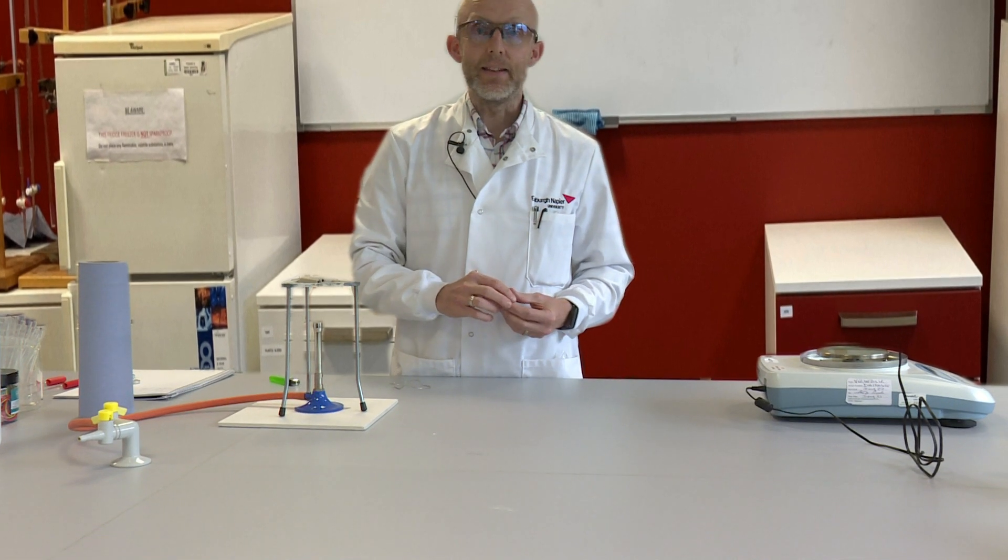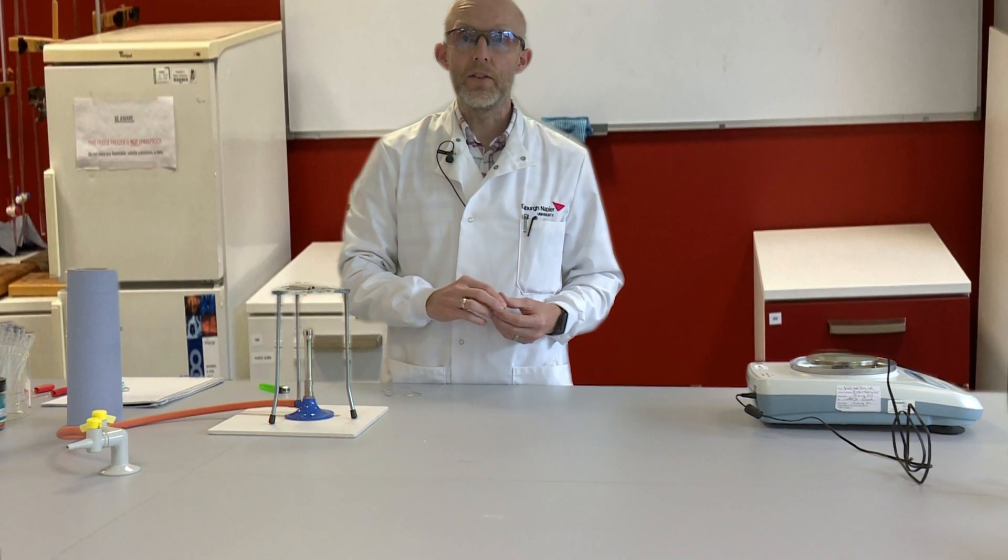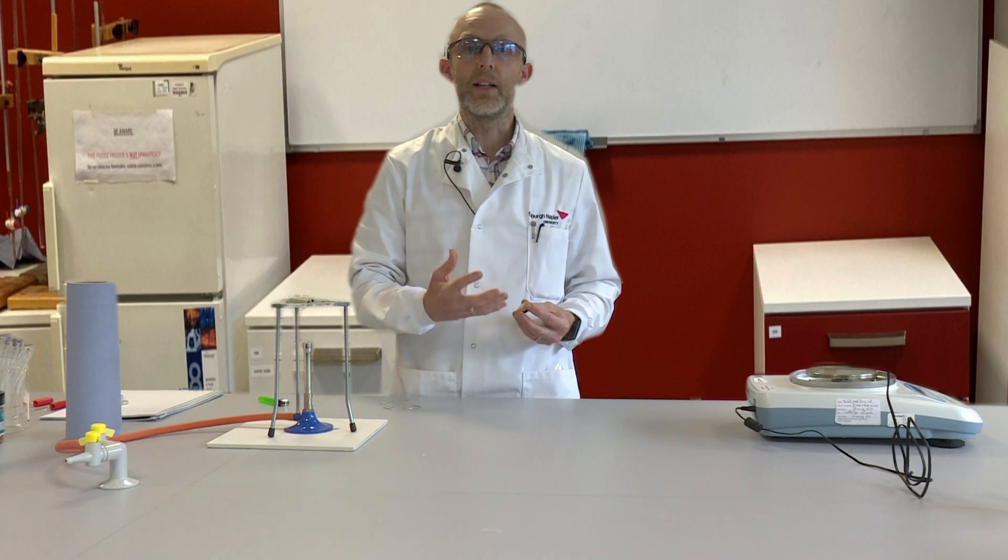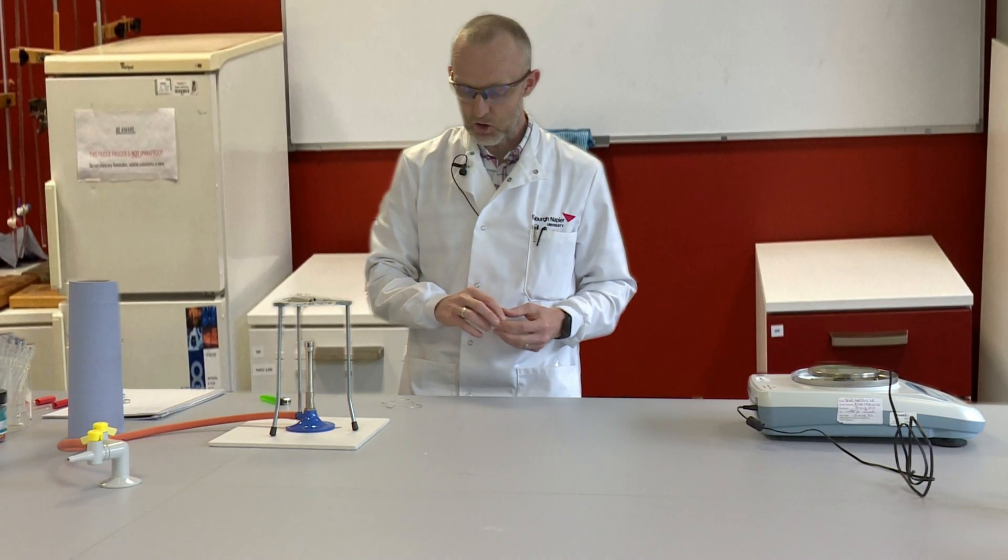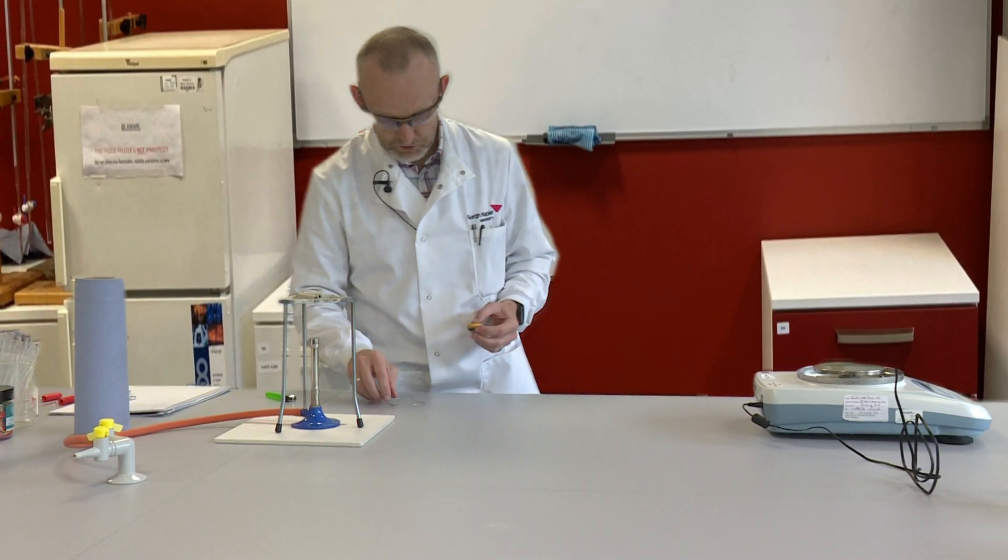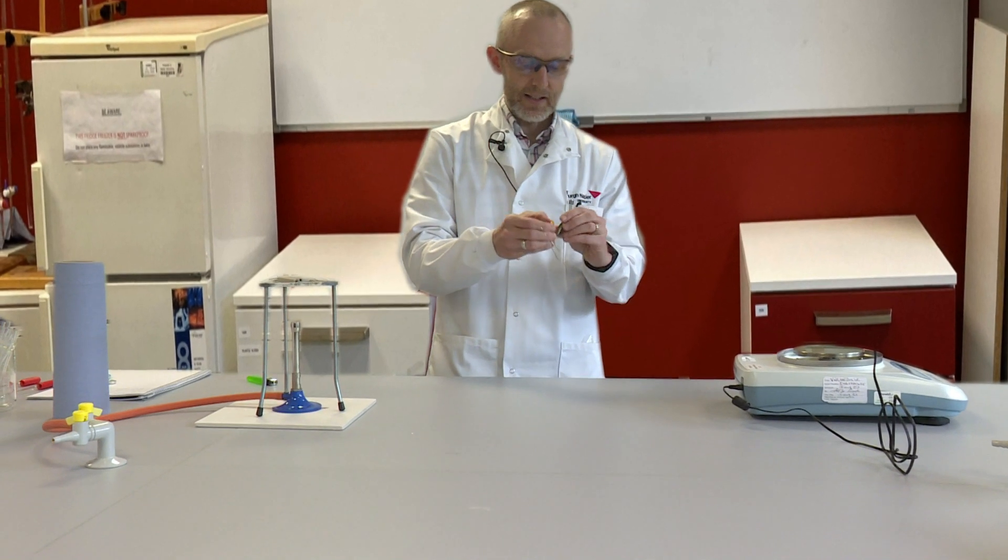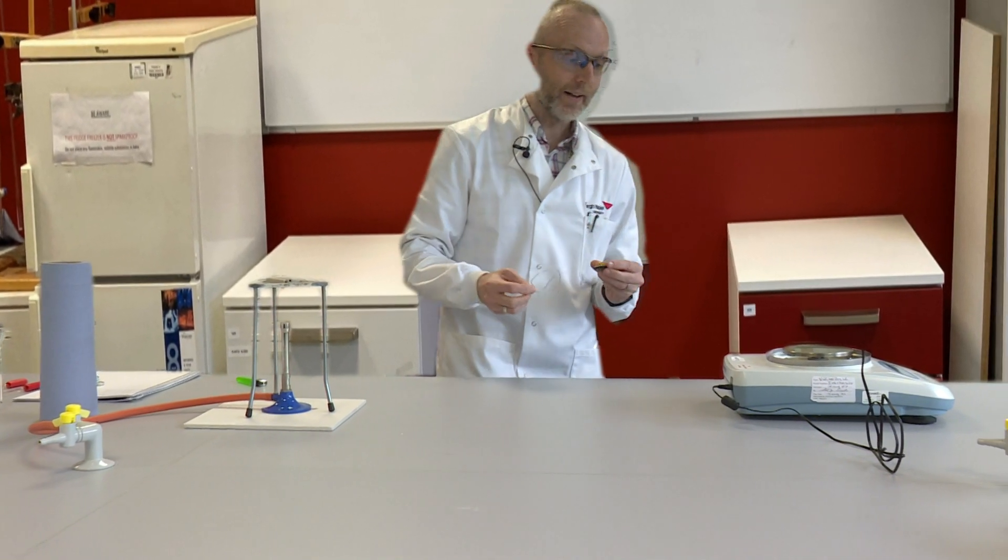And then by taking the mass of the magnesium that we start with and the magnesium oxide that we form, we'll be able to calculate the formula of magnesium oxide.